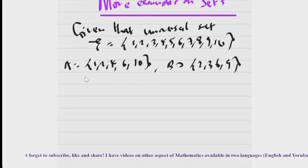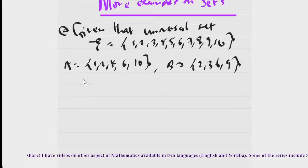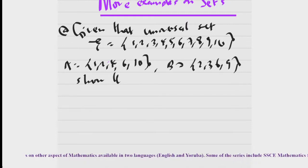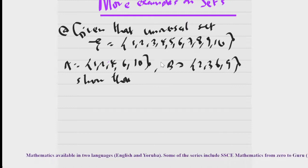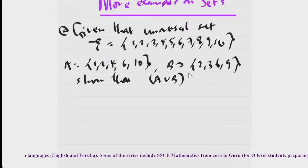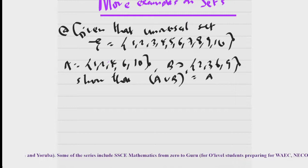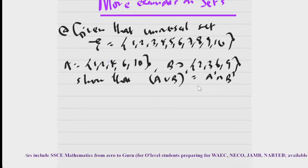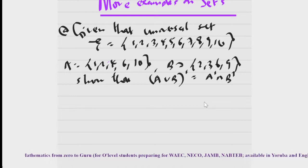Then the question asks us to show that A union B complement is equal to A complement intersection B complement. What's that law? That's De Morgan's law, if you don't forget.